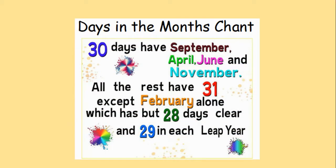We're going to start with the days in the months chant. I'm going to read the chant out and then you can pause and you can read it. 30 days have September, April, June and November. All the rest have 31 except February alone which has but 28 days clear and 29 in each leap year. Now it's your turn. Press pause now and then press play.